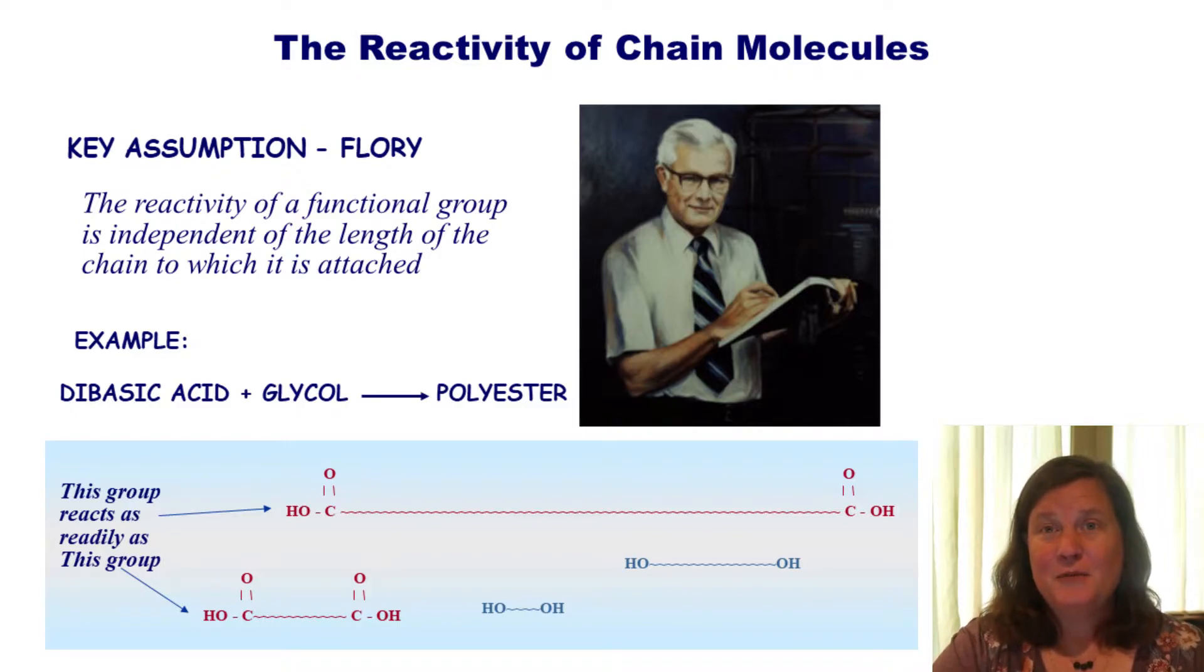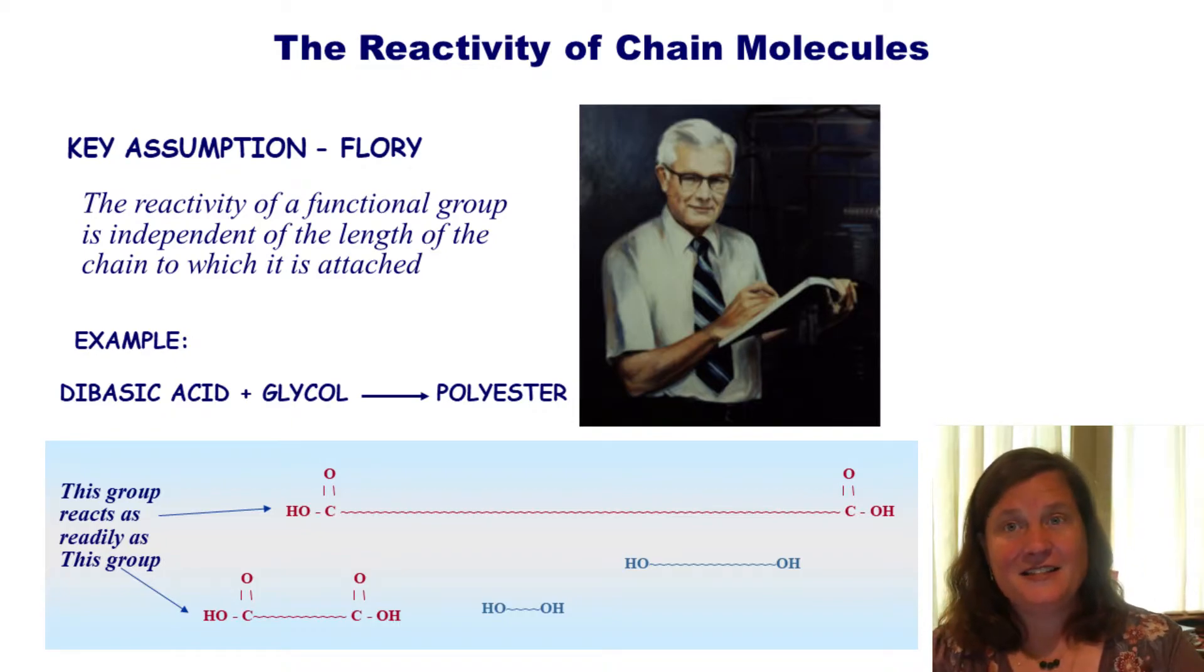This is crucial because if the reactivity slowed as the chain got longer, we would never get to high molecular weight polymers because the reaction would just slow down and slow down. Back in the 30s, that's what was believed and that's why they didn't think you could have macromolecules, but we know that's wrong and this is a crucial and valid assumption. It doesn't matter if the diacid is huge or a monomer. Reactivity is independent of chain length.